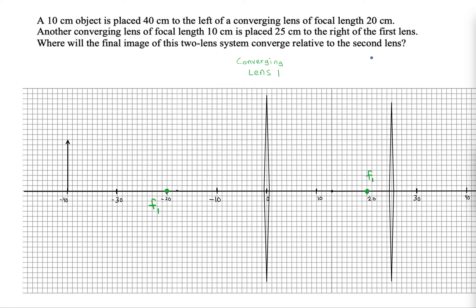So this is converging lens two, and I've got to put focal points down 10 centimeters to the left and 10 centimeters to the right.